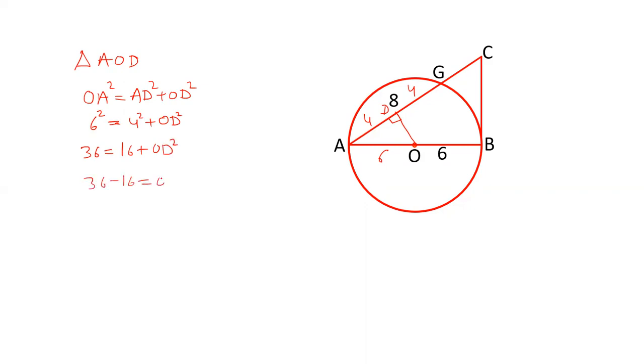36 minus 16 equals OD². This is 20 equals OD², and therefore OD equals √20, which on calculation gives 2√5. So the length of OD is 2√5.